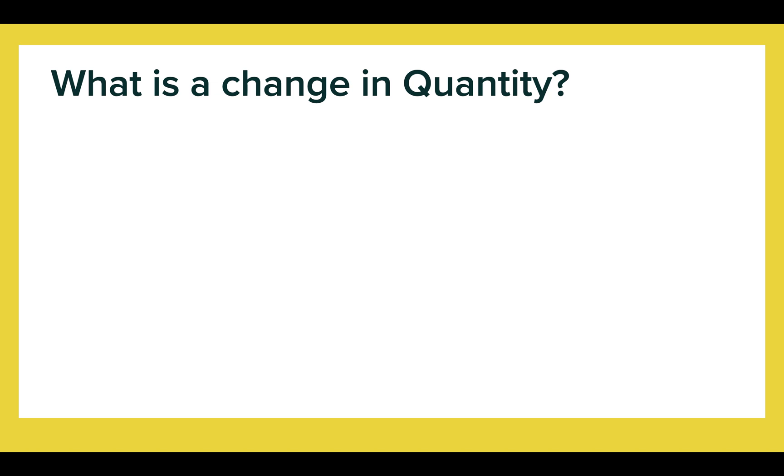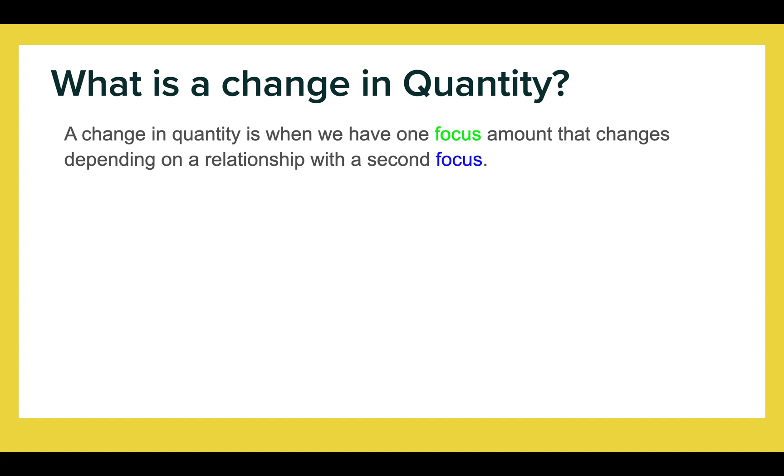What is a change in quantity? Well, we know what quantity is, right? If I have four oranges in my bag, what's the quantity of oranges? Four. It's just the amount of something that we have. A change in quantity is when we have one focus amount that changes depending on a relationship with a second focus. I know that sounds confusing, but in a second you will fully understand what I mean.